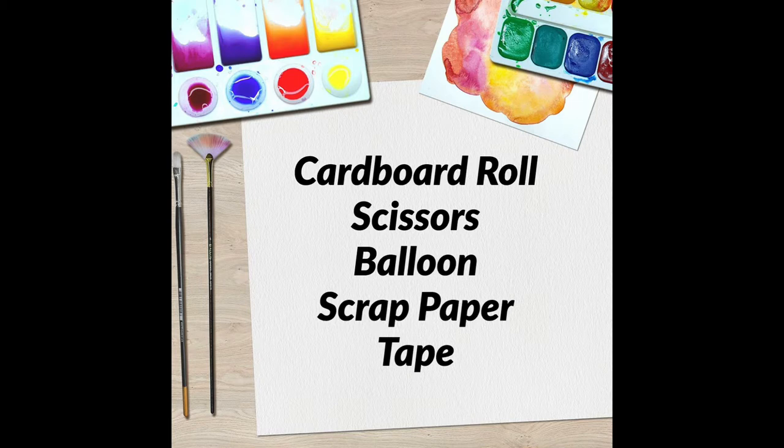And we're going to be using some toilet paper rolls or this is a paper towel roll that you can cut down. We're going to have scissors, a balloon, some scrap paper and just any type of tape. So we're going to get all this stuff together and I'm going to show you step by step how to make this party popper for a New Year's celebration that you guys can do at home.